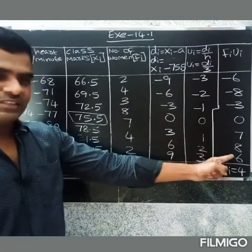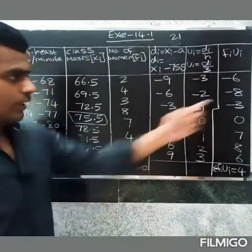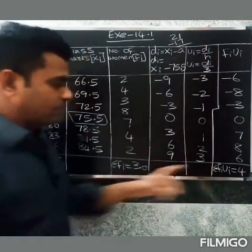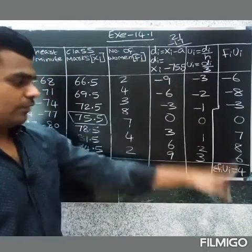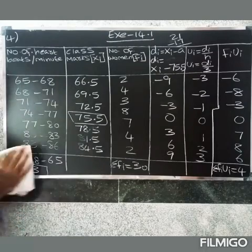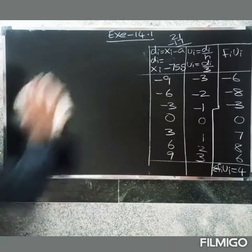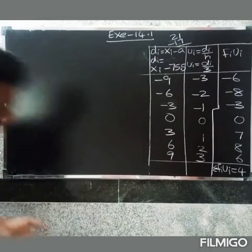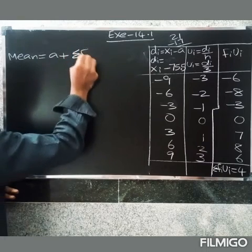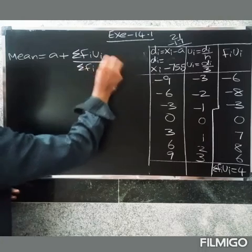So 8 plus 7 equals 15; 15 plus 6 equals 21. And 21 minus 17 equals 4. So summation F·Ui equals 4. Mean equals A plus summation F·Ui divided by summation F, into h.